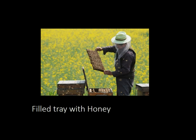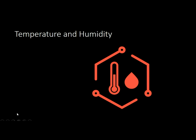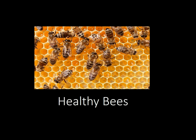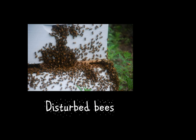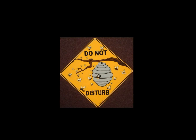The farmer is shown taking the tray out when it is filled with honey. The farmer is also notified with temperature and humidity information sensed by the DHT11 sensor — if the temperature is high, the bees will be healthy. Position of the box plays an important role, because if the bees are disturbed no honey will be formed. If the box is displaced or disturbed, the accelerometer notifies the user — so do not disturb the bees.